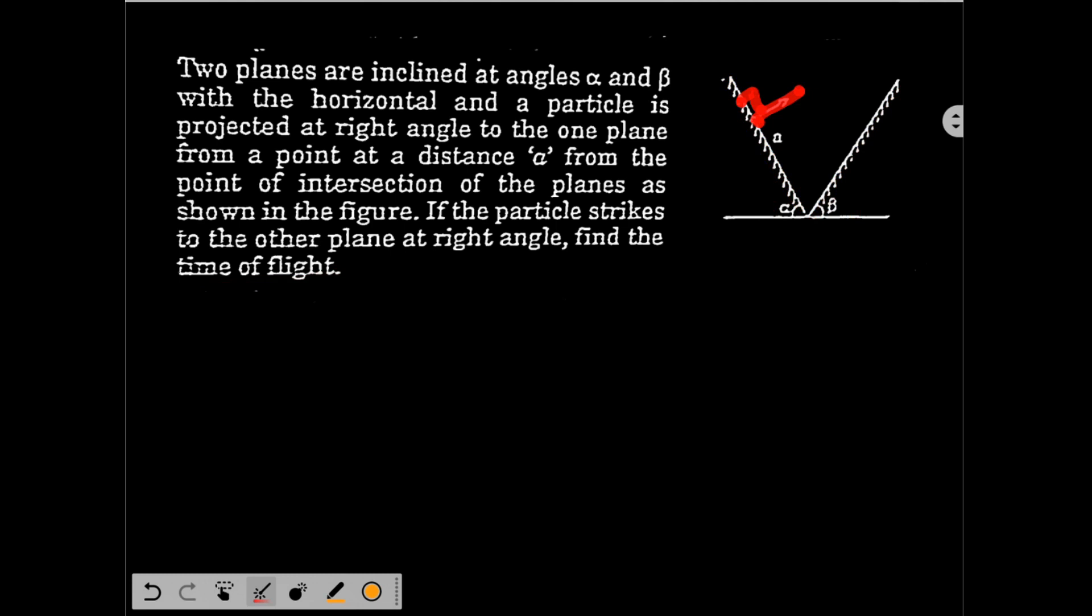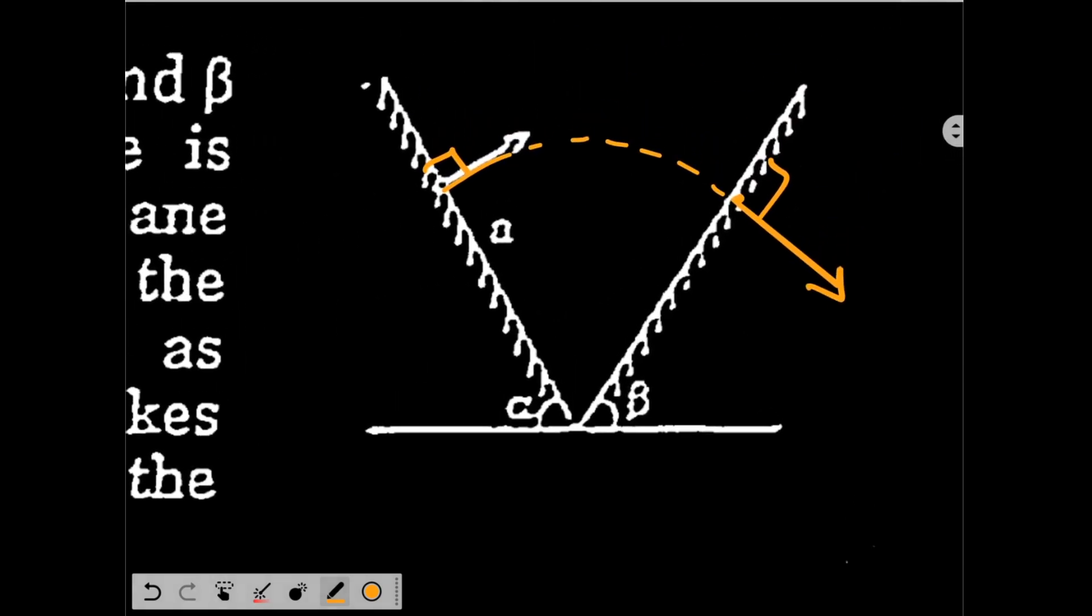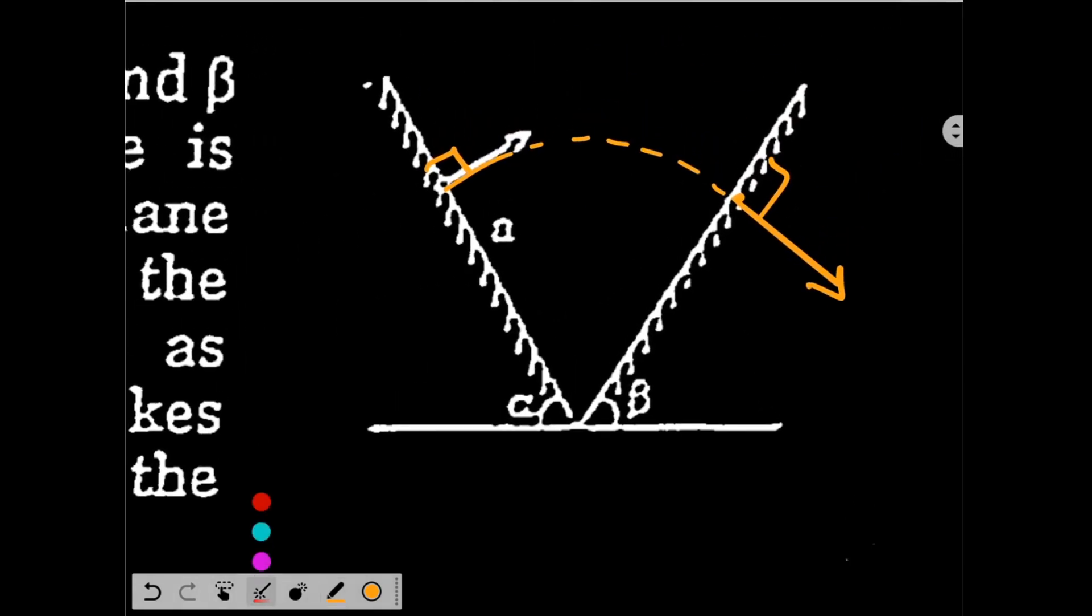A particle is projected perpendicular to this first incline and it flies and strikes the other incline plane such that its velocity over there is perpendicular to the second incline. It starts with 90 degree angle, flies and strikes the other inclined plane at 90 degree angle.